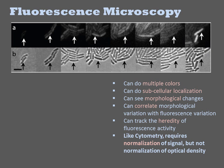For larger cells, you can also monitor subcellular localization. You can also see morphological changes in the population. This allows you to correlate morphological variation with fluorescence variation. And this is information typically missed in other forms of measurement. You can track the heredity of fluorescent activity for a lineage of cells as well. But like cytometry, microscopy requires normalization of signal, but not normalization of optical density.